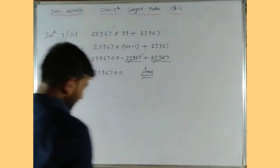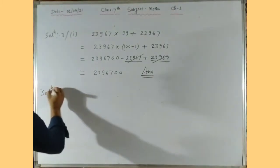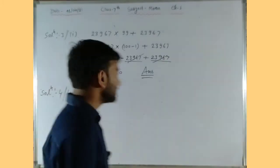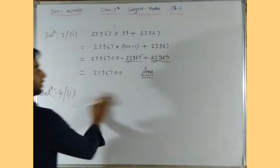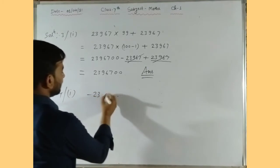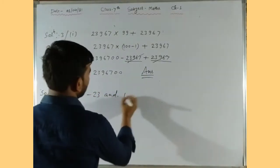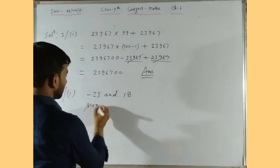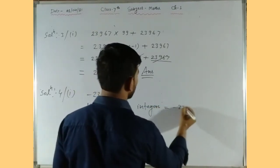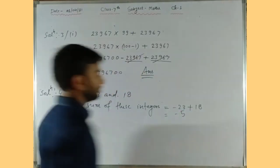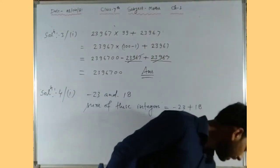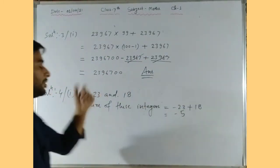Question number 4: write down a pair of integers whose sum is minus 5. We can write minus 23 and 18. The sum of these integers: minus 23 plus 18 equals minus 5. So this is one valid pair. Next part: write integers whose difference is minus 9.